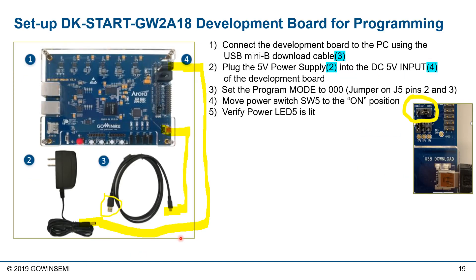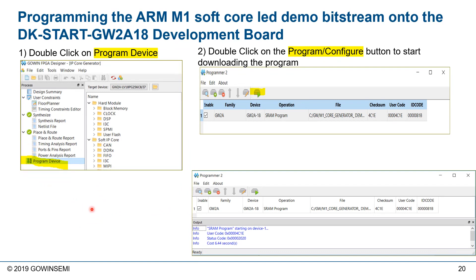Now we're ready to configure our development board for programming. Connect to the PC using a USB mini download cable, then bring power to the board using the 5-volt power supply. On the board, make sure we're in Mode Zero for programming. Once set, turn on power to the board and verify it's applied by checking that LED 5 is lit. We're now ready to program the device with the FS bitstream file generated after place and route. This file contains the Cortex M1 program code and the FPGA code to interface with the rest of the development board.